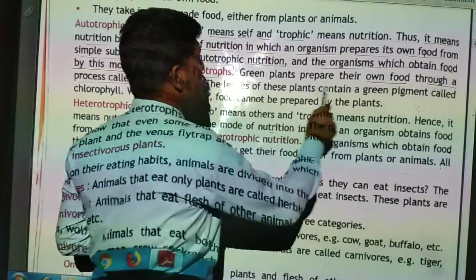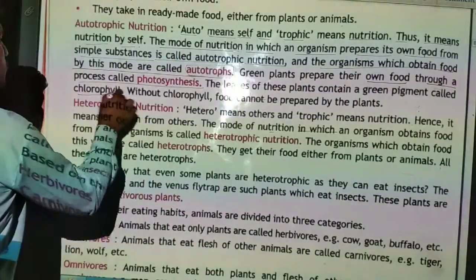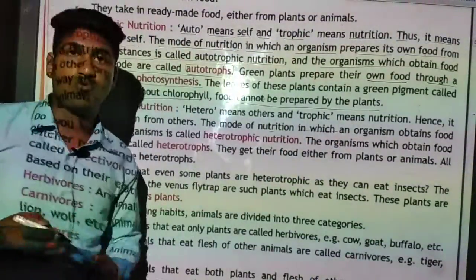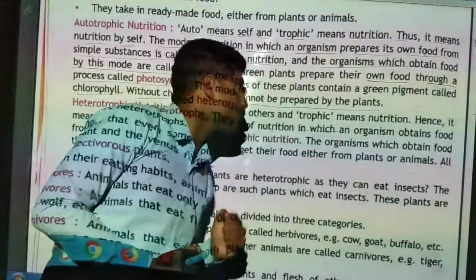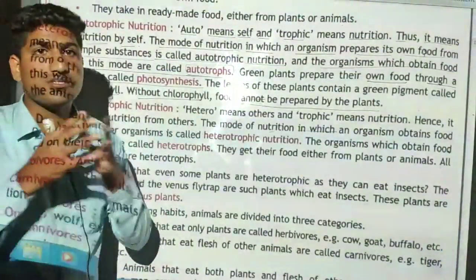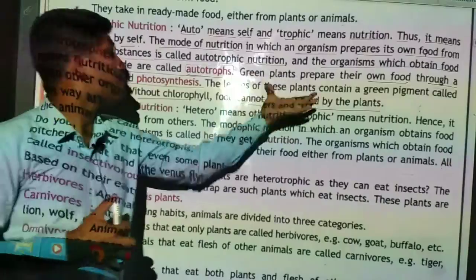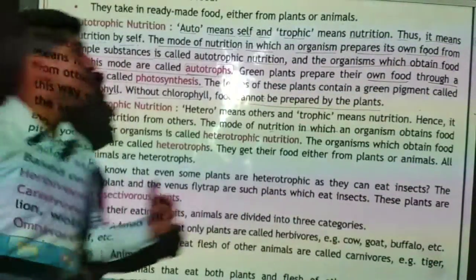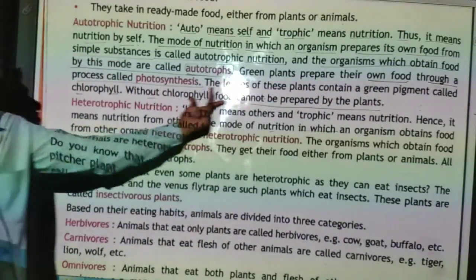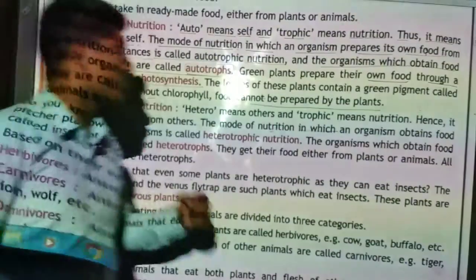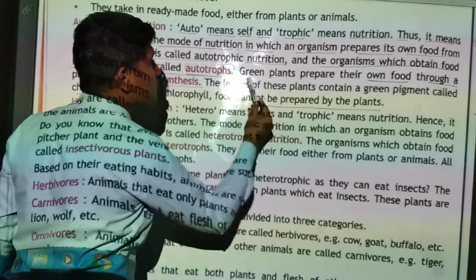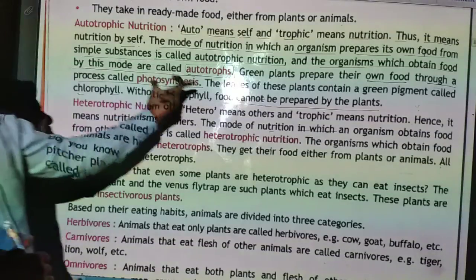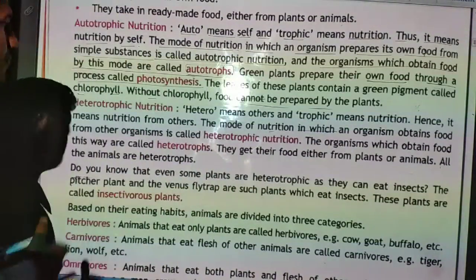The leaves of these plants contain a green pigment called chlorophyll. Without chlorophyll, food cannot be prepared by plants. The leaves help in the process of photosynthesis, and the chlorophyll present in the leaves helps the plant to prepare its own food.